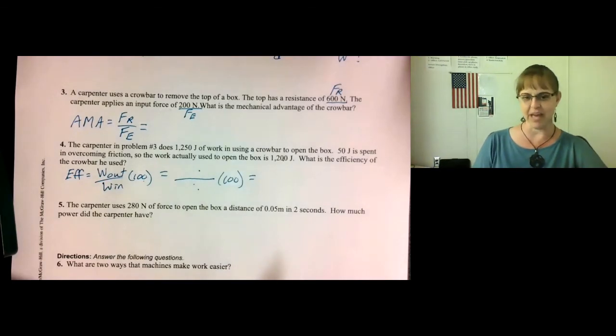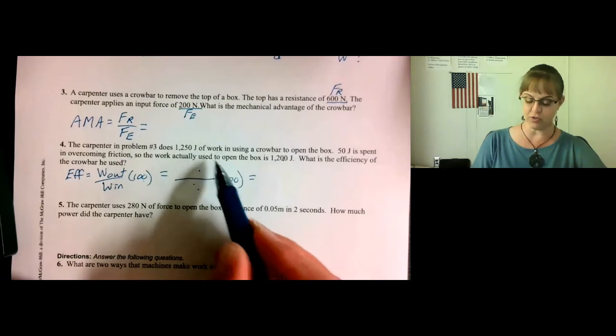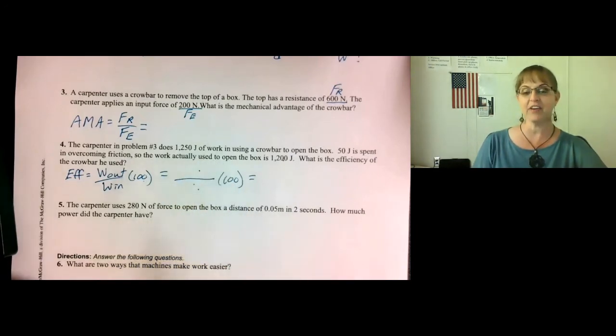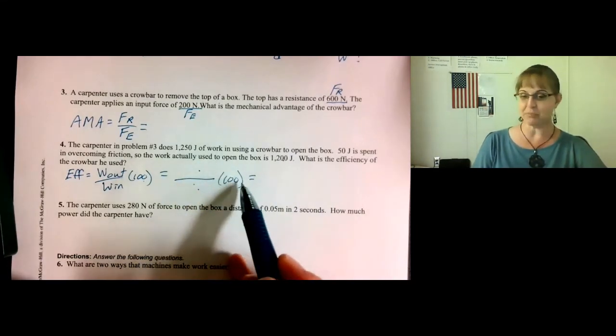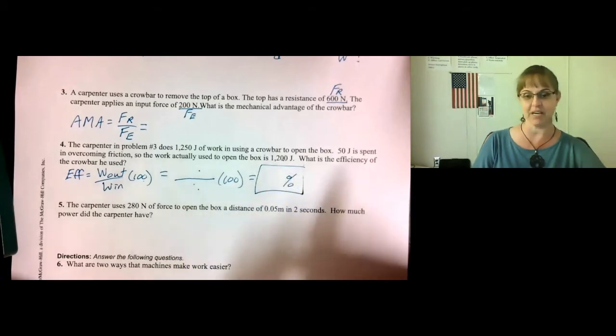But what units do we have? This was joules and this was joules. Joules divided by joules cancels and there is no unit. But then you multiply times 100 which turns it into a percent. So please put a percent sign beside your answer.